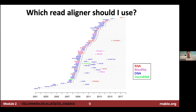Which aligner should you use? Over the years dozens or hundreds of aligners were invented for different applications, but now for RNA there are only a couple of options you'd consider, and for DNA there's essentially one main option most people use unless doing a very specific application.